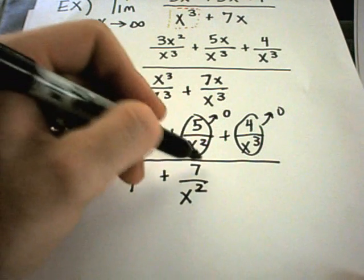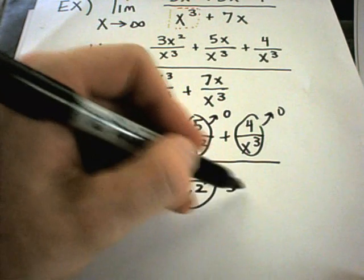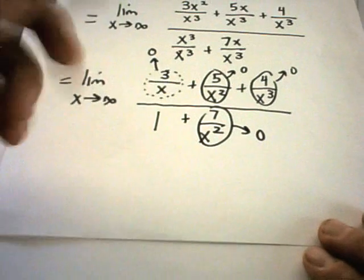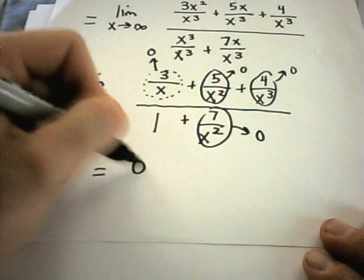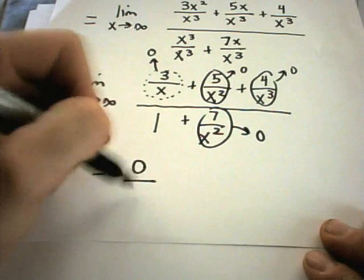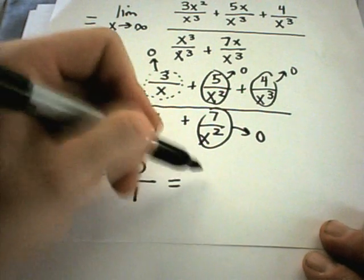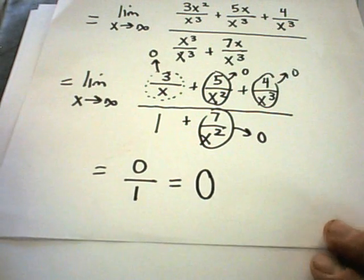Same thing with 7 over x squared — that's going to go to 0. So what are we left with? We're left with 0 on top, 1 on the bottom. Our limit in this case is going to equal 0.